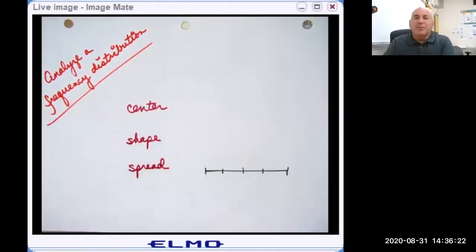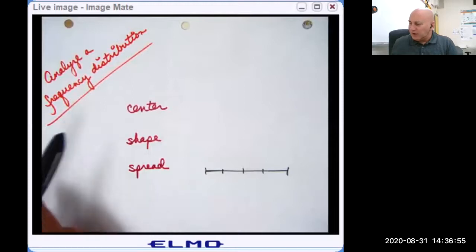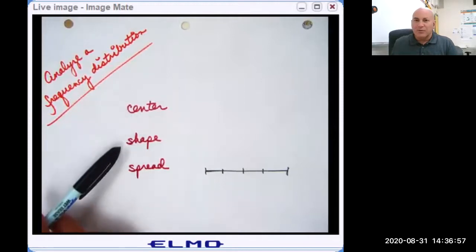And then spread, some measure of how spread out are the data. Are all women between this height and this height, or do they go from here to here? Maybe we're saying, these outliers over here on the low side, and these outliers over here on the high side, we're not going to worry about that. Just tell me how spread out the middle 50% of the data is. So when we're analyzing a frequency distribution, we want to look at center, shape, and spread.